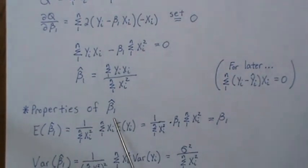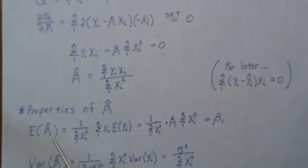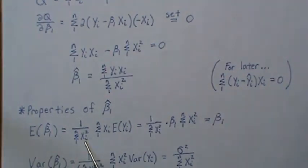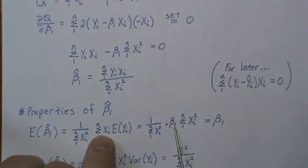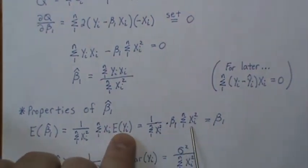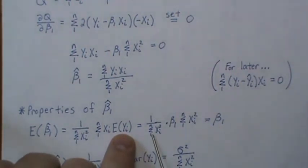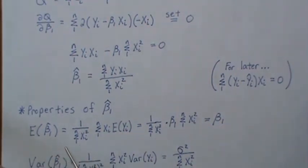The properties of beta one hat, the expected value is this. So everything's a constant with the y, so it goes into it. The expected value of y is the regression line. So it's xi beta one. And so the beta one's constant can come out front, and that x, and the x in here becomes x squared, and those cancel, leaving beta one. So it is an unbiased estimate.